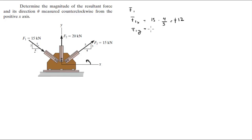And the y-component is given by 15 times 3 over 5, and it's negative because it's going down towards the negative y-direction. So F1 is equal to 12i minus 9j.